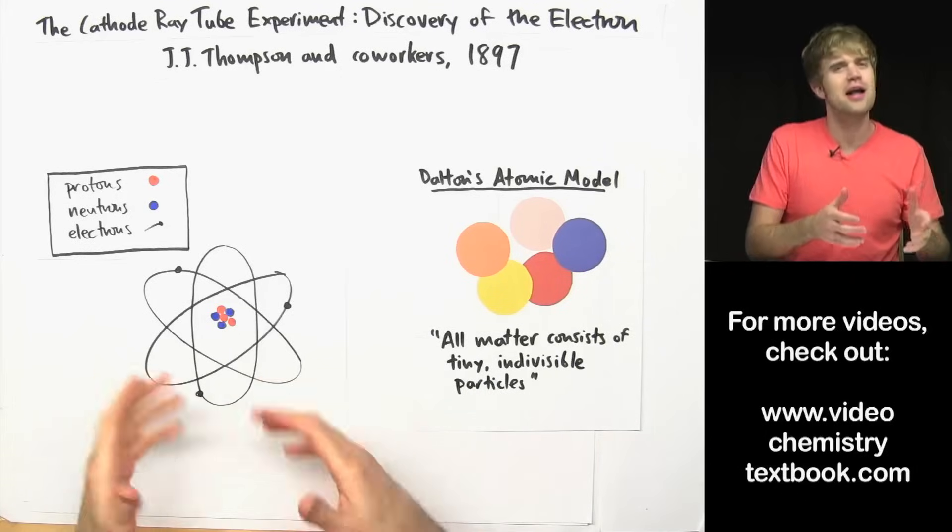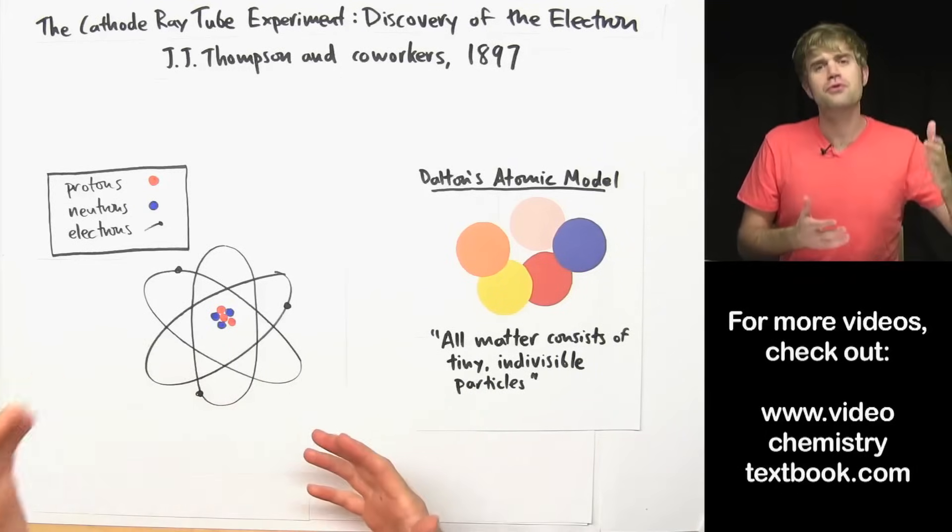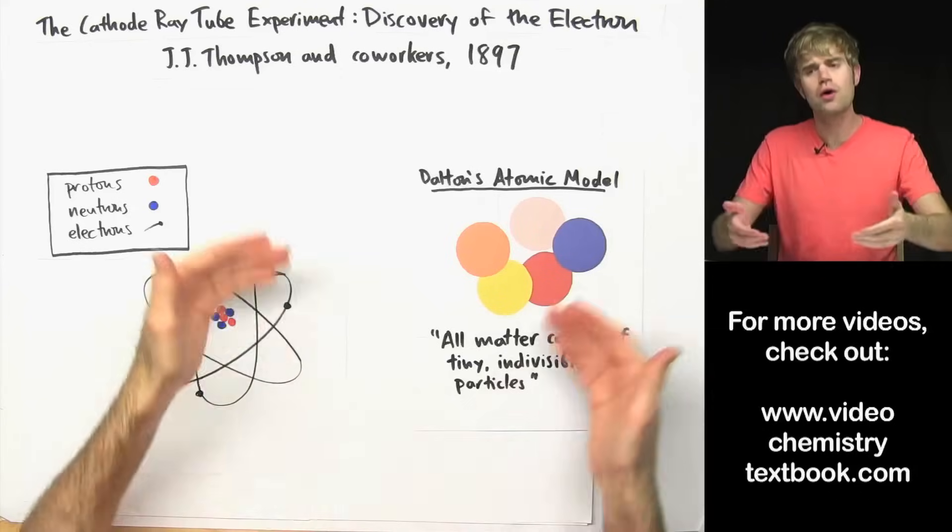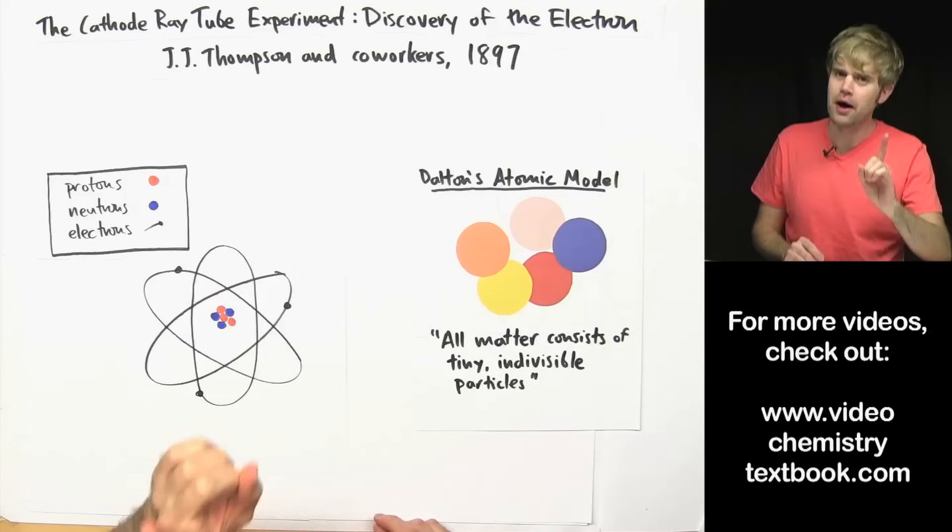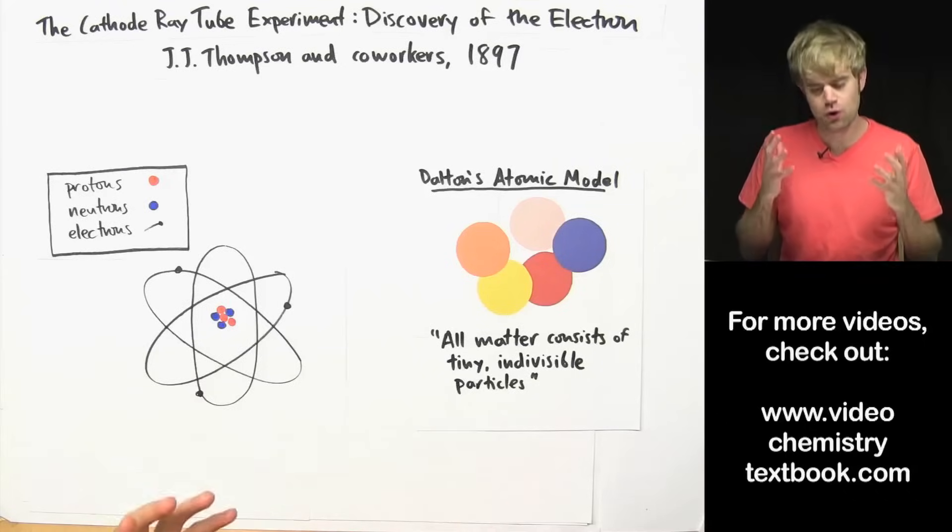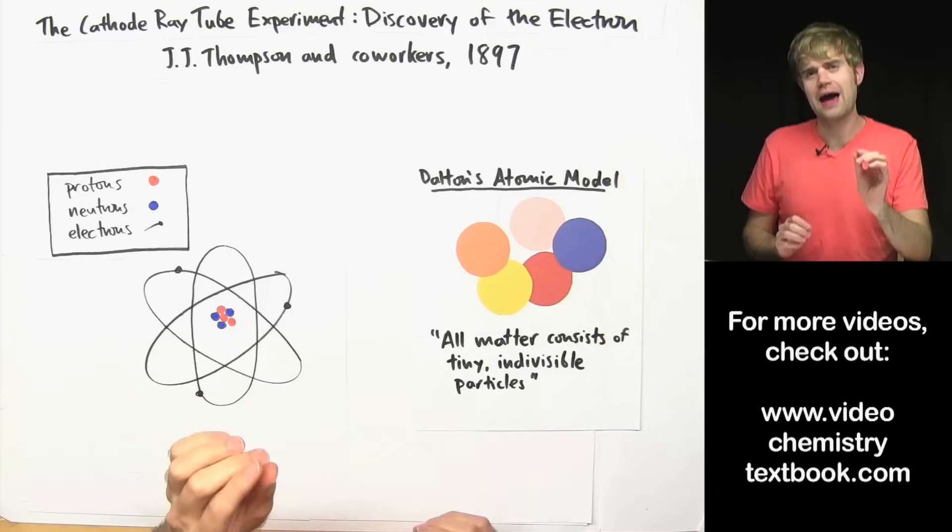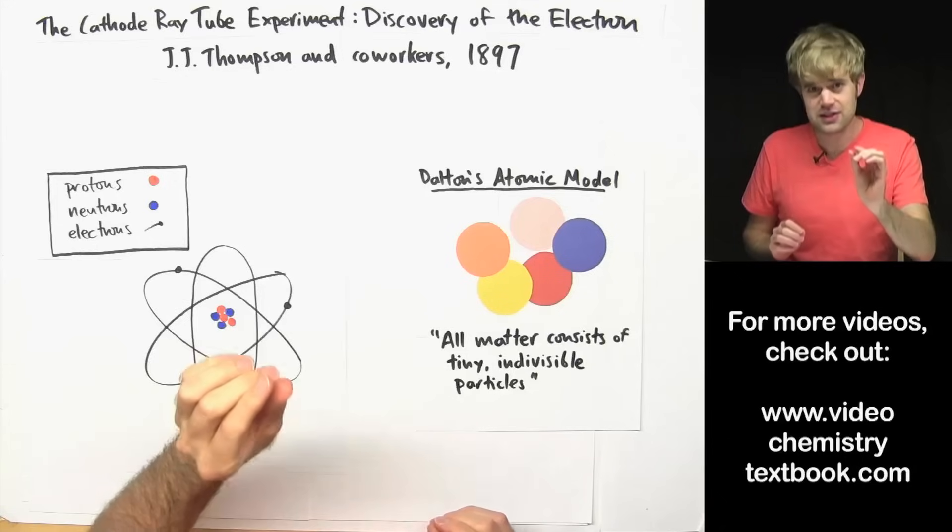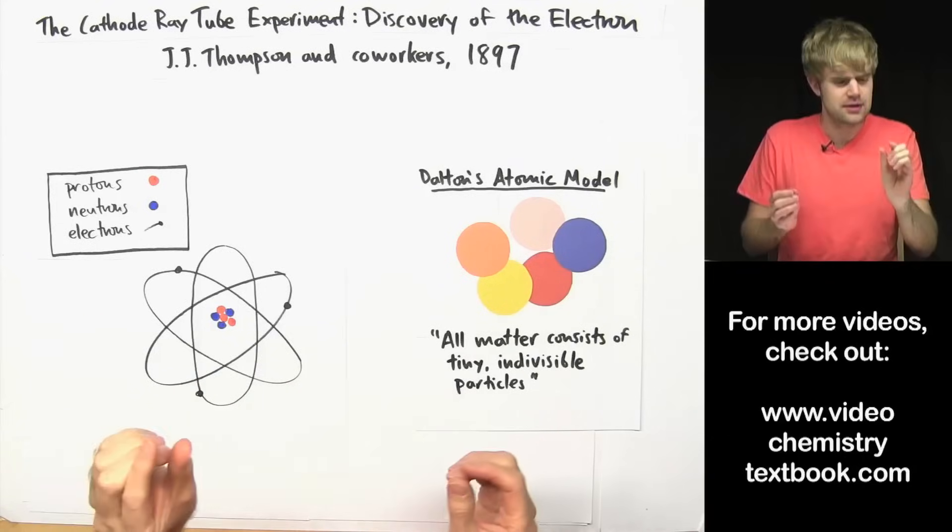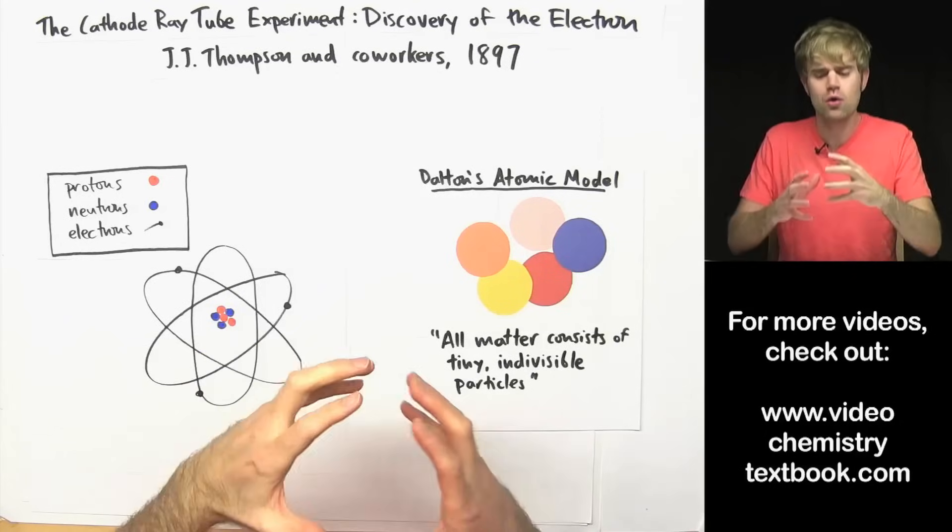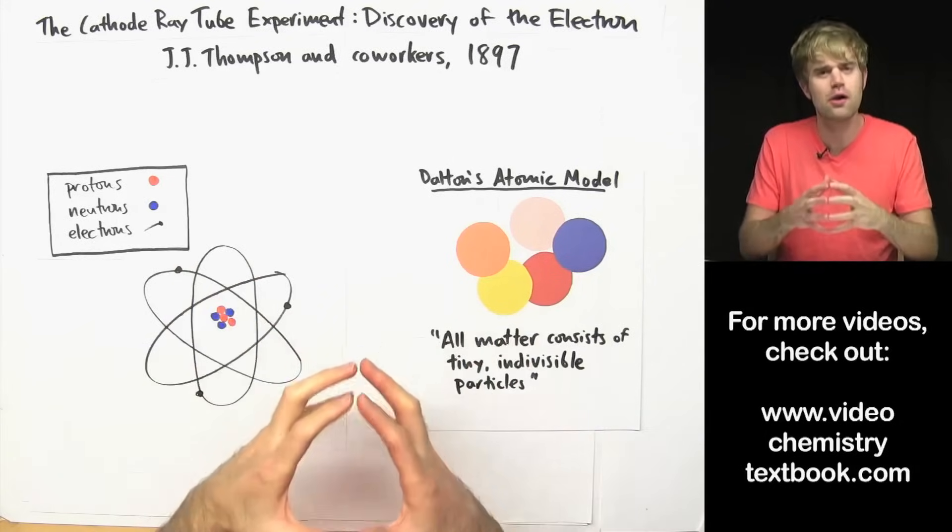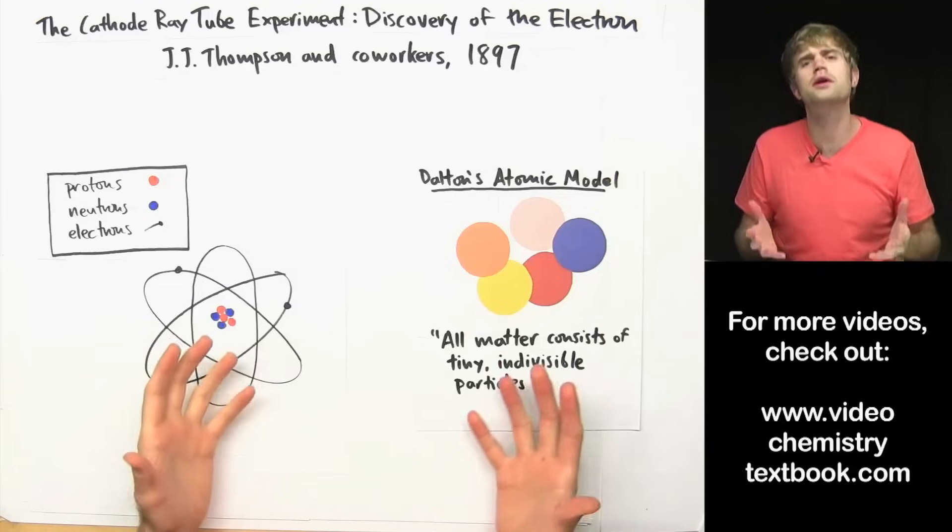At first not many people believed him, but throughout the course of the 1800s more and more scientists got on board with his idea. But it remained an open question whether the atoms were really indivisible. Were they like tiny little billiard balls, you know, hard and solid? Or were they made of smaller things? No one really knew the answer to that.